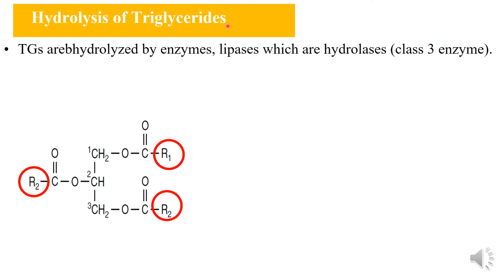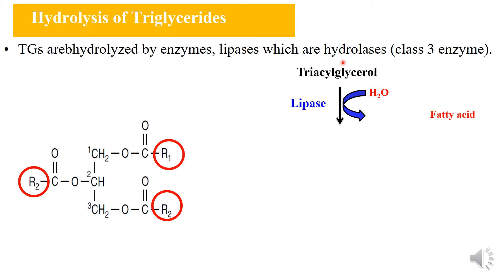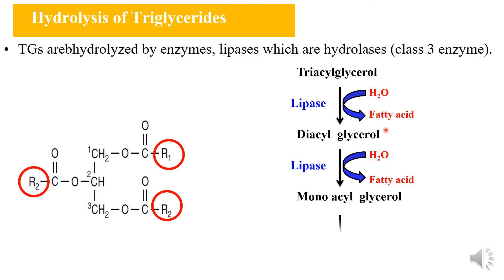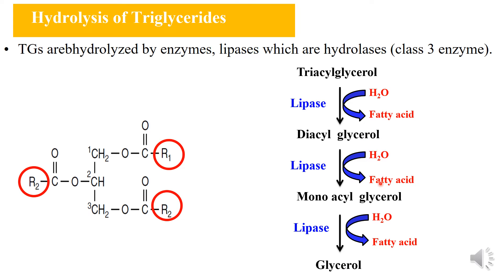Hydrolysis of triglycerides: triglycerides are hydrolyzed by the enzyme lipase, which are hydrolases — they are class 3 enzymes. Triacylglycerol is sequentially hydrolyzed by lipase: one fatty acid is removed to give diacylglycerol, the second fatty acid is removed to give monoacylglycerol, and the third fatty acid is removed to form glycerol.